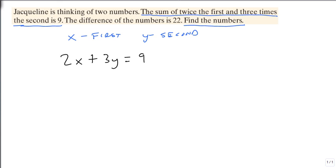It then says, here's our second equation, the difference of the numbers, so x minus y equals 22. I'm putting x first and y second because they're labeled as the first and second numbers. So here's equation one, here's equation two, and here's our system.